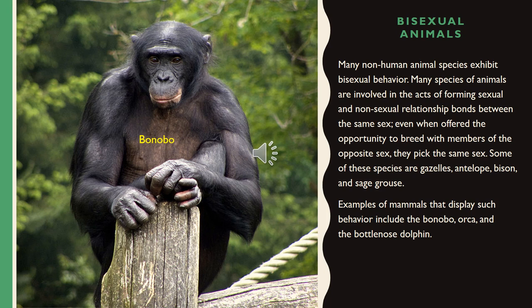Many non-human animal species exhibit bisexual behavior. Many species of animals are involved in forming sexual and non-sexual relationship bonds between the same sex, even when offered the opportunity to breed with members of the opposite sex — they pick the same sex. Some of these species are gorillas, antelope, bison, and sage grouse. Examples of mammals that display such behavior include the baboon, orca, and bottlenose dolphin.